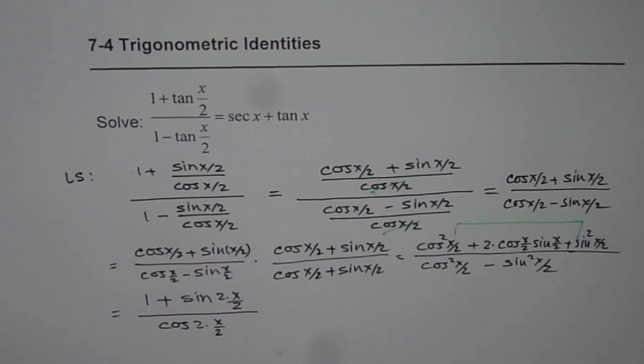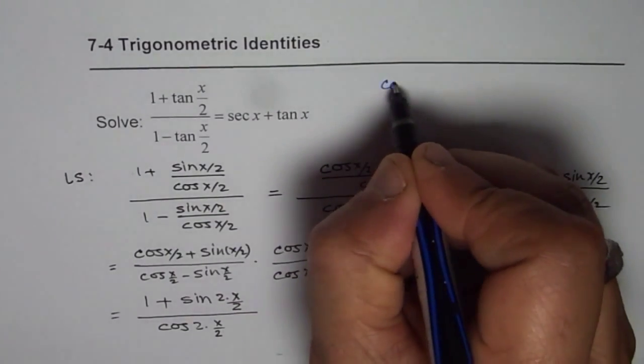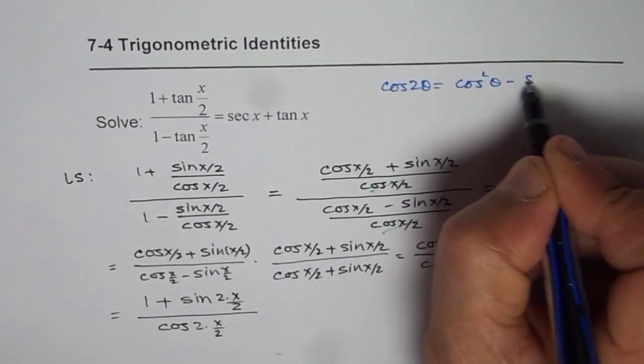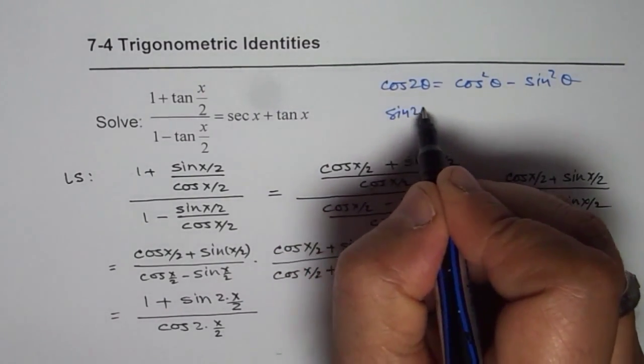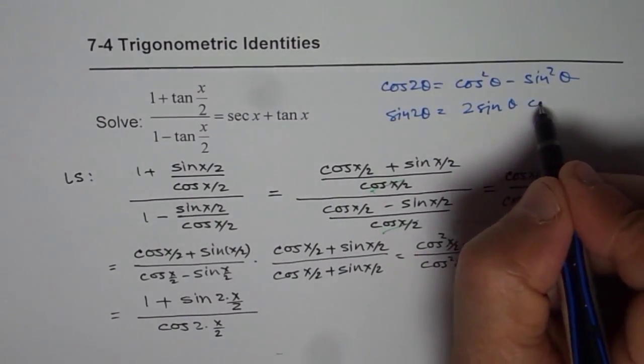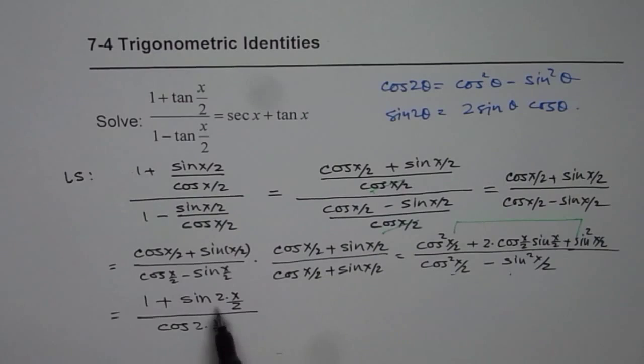We have applied the formulas: cos(2θ) = cos^2(θ) - sin^2(θ) and sin(2θ) = 2sin(θ)cos(θ). That is what we have applied and got this result.